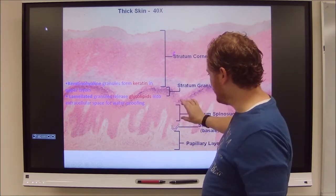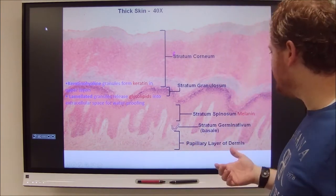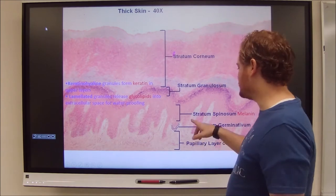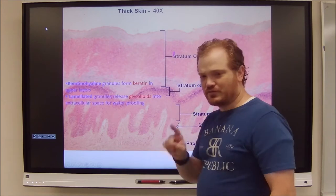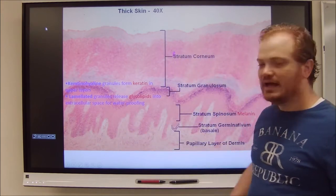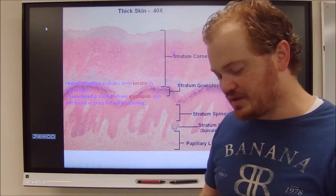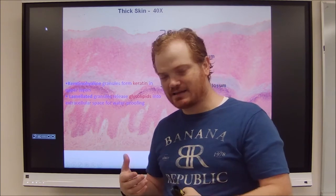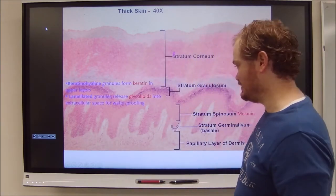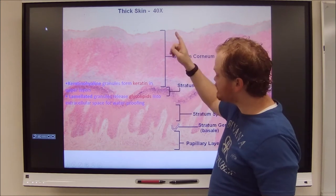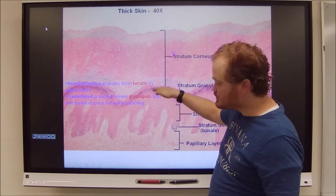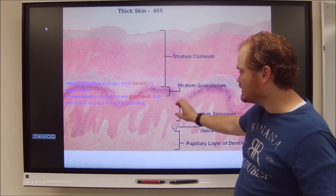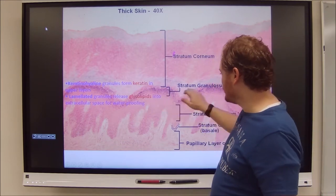The stratum spinosum is the last real living cell layer, and it's important because it's where melanin does its job. The stratum basale is the first layer of cells, closest to the underlying connective tissue, so this is where all the nutrients pass into first. These are metabolically active, mitotic cells — the skin grows from the stratum basale, pushes upward until it becomes waterproof, then the cells die and flake away. Melanin protects the inner layers from UV radiation in the stratum spinosum, while glycolipids and keratin are produced in the stratum granulosum.